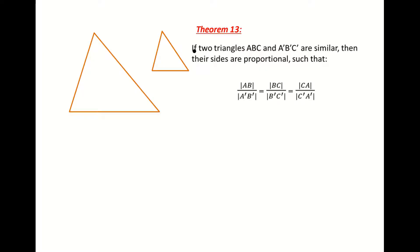This is the proof to Theorem 13 on our Leaving Cert Honours course, which states that if two triangles ABC and A'B'C' are similar, then their sides are proportional, such that it can be written as so. We will need a lot of our Theorem 12 to help us with this, so we need to revise Theorem 12 before looking at Theorem 13.